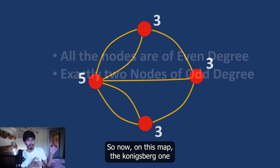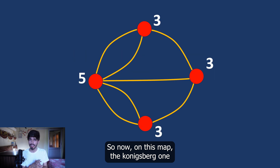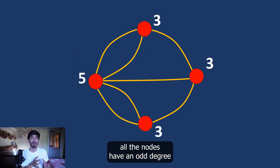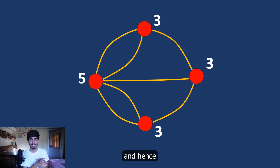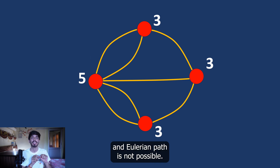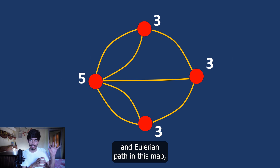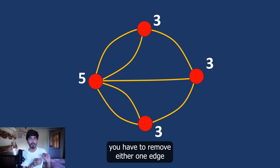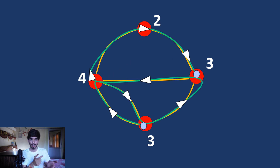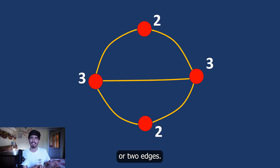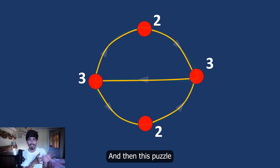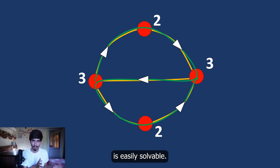On the Königsberg map, all the nodes have an odd degree, and hence an Eulerian path is not possible. If you want to travel an Eulerian path in this map, you would have to remove either one edge or two edges — then this puzzle becomes easily solvable.